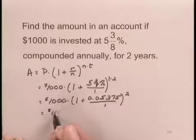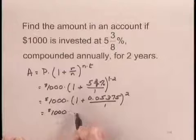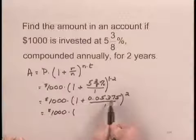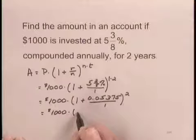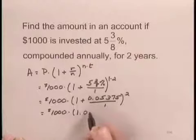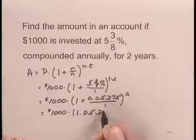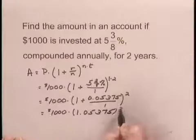And that gives us 1,000 times this number over 1 is just this number. And when I add 1, I get 1.05375 squared.